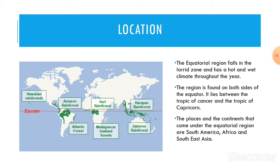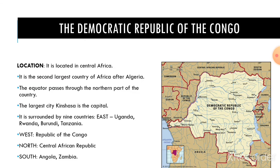Now we will study about the various features of the Democratic Republic of Congo. Earlier it was called Zaire. It lies in the equatorial region. It is located in Central Africa and is the second largest country of Africa after Algeria. The equator passes through the northern part of the country. The largest city, Kinshasa, is the capital, and it is surrounded by nine countries.